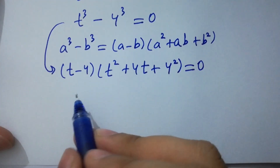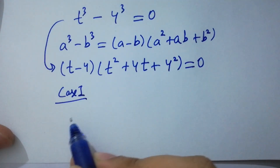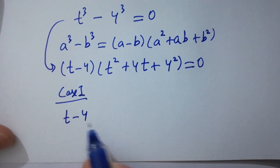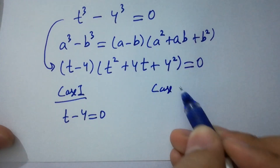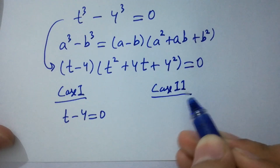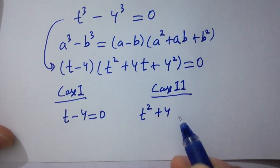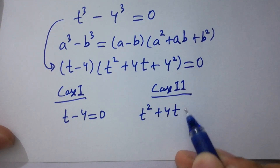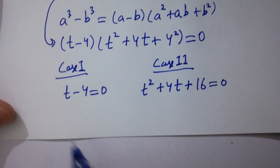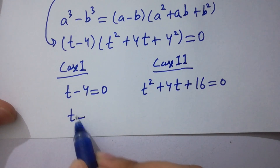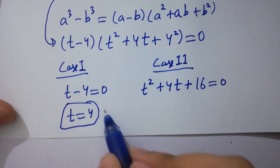So we have two cases here. Case 1: t minus 4 equals 0, which gives t equals 4. Case 2: t squared plus 4t plus 16 equals 0. From Case 1, the value of t equals 4, which is our real solution.